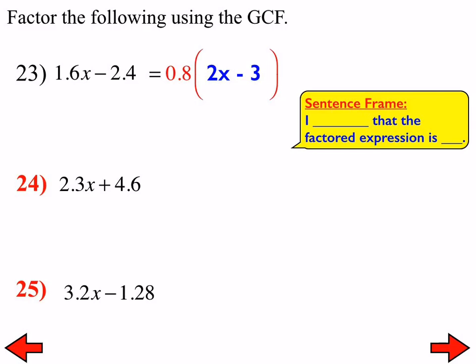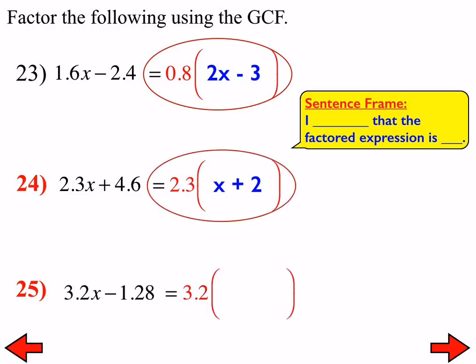Go ahead and do number 24 and 25. And, then we have one last thing to talk about. Okay. Number 24. The GCF is 2.3. So, that would be 2.3 times the quantity of x plus 2. There were a few more people who struggled on this last one. But, the GCF is 3.2. If you use anything other than that, then what you have left within the parentheses will still have something in common. So, this one should be 3.2 times the quantity of x minus 4.